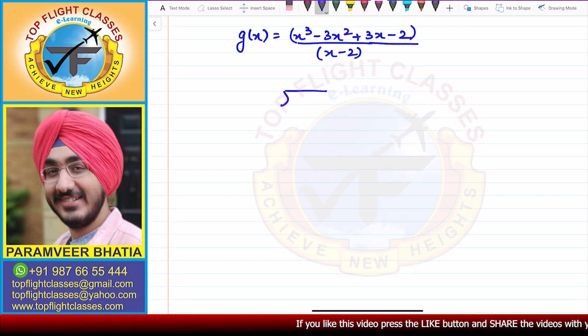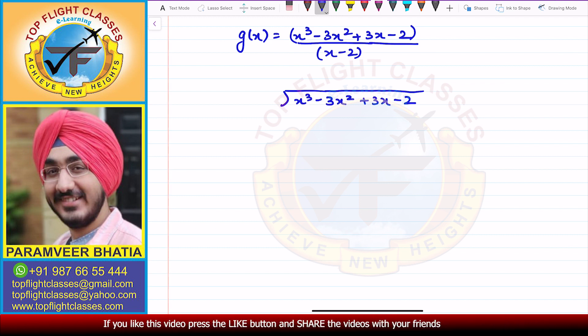Now we will solve this by long division method. In long division we have x³ - 3x² + 3x - 2 and x - 2. First, to eliminate x³, we will multiply by x². So from here we will get x³ and -2 × x², that will be -2x².